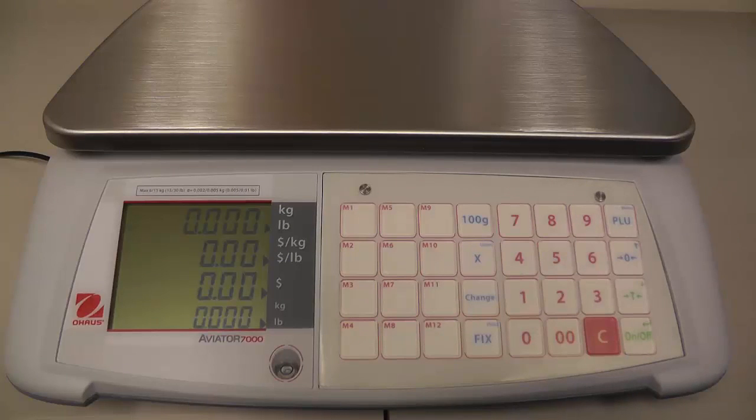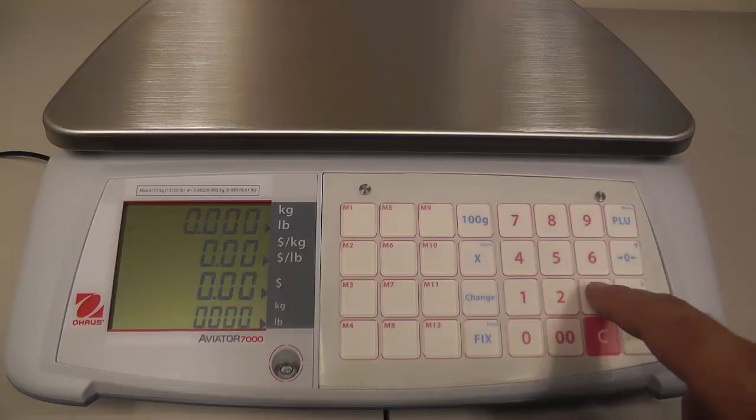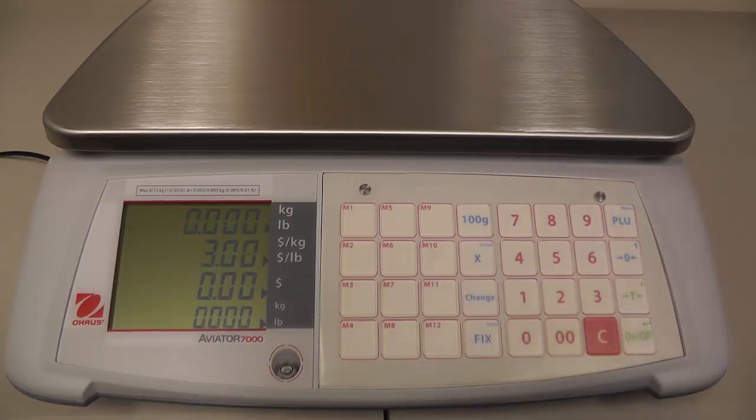However, if you had some apples that you rang up on the scale quite often, you could save the information in the scale so that it might eliminate some keystrokes over the course of the day. In this example we'll look at creating a PLU or a price lookup. The way that we do that is we enter the price, and we'll just stick with the same one, three dollars a pound.